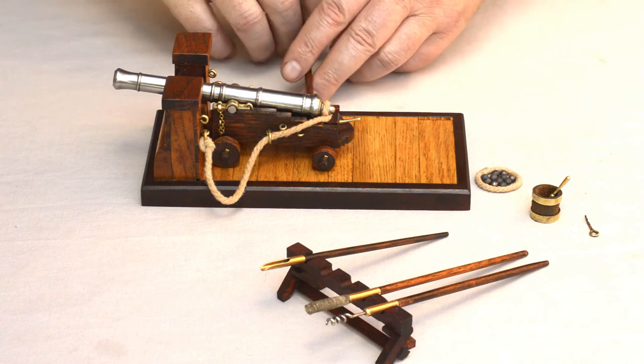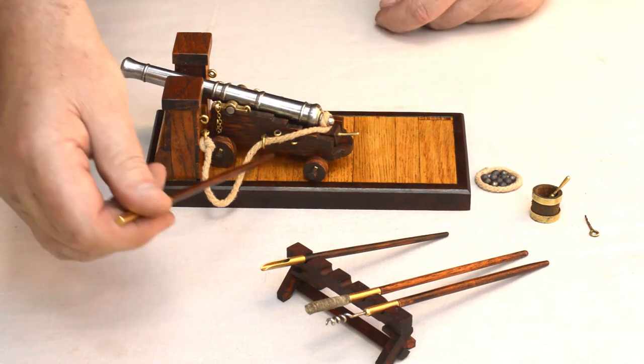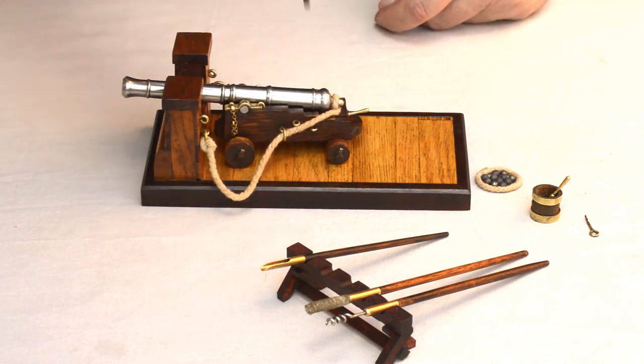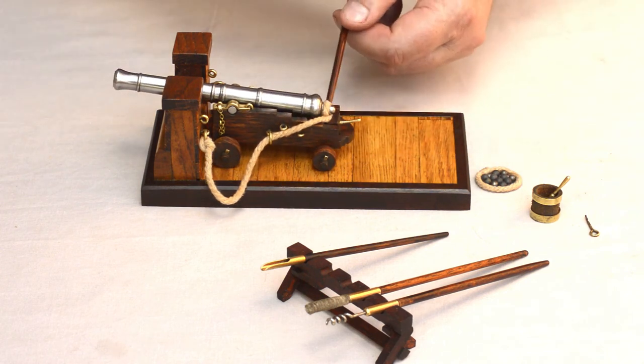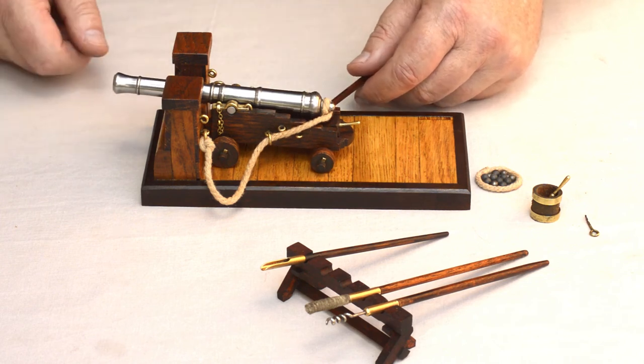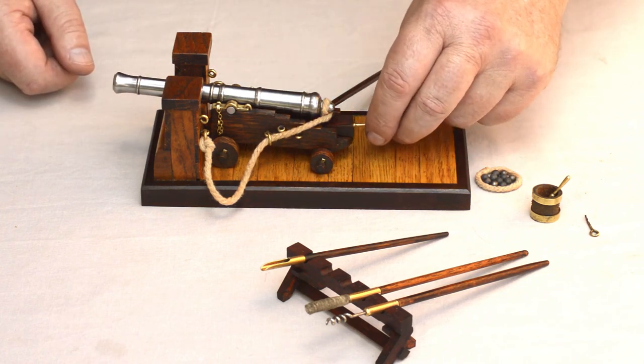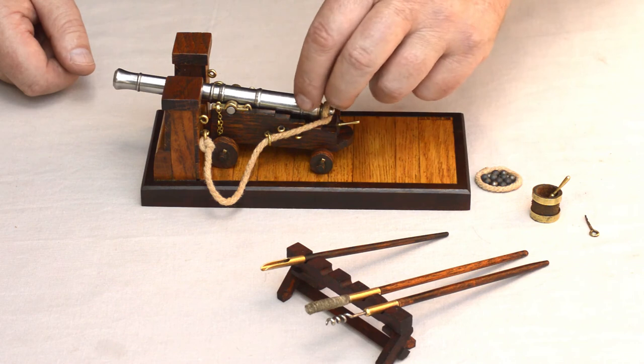In its run-out position, the gun's traverse could be altered by using handspikes and manhandling the gun in this fashion. Similarly, the gun's elevation would be altered by using handspikes as well, and then adjusting the elevation quoin once the suitable position has been found.